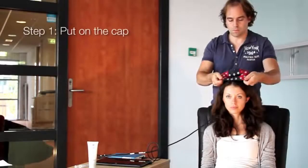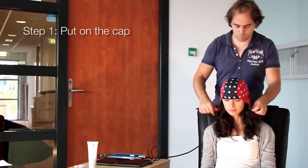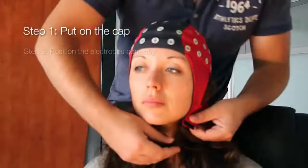Place the frontal electrodes on the forehead first and then gently pull the cap back and over the head. Fasten the cap using the chin strap.